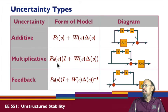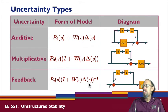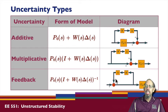We can also have a feedback type of uncertainty, which is another form of multiplicative uncertainty. The difference is that we have this feedback occurring — and that should be a negative sign — so we want to see how to analyze problems that involve these kinds of uncertainty types.